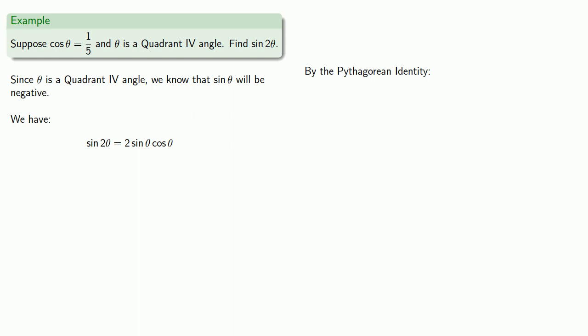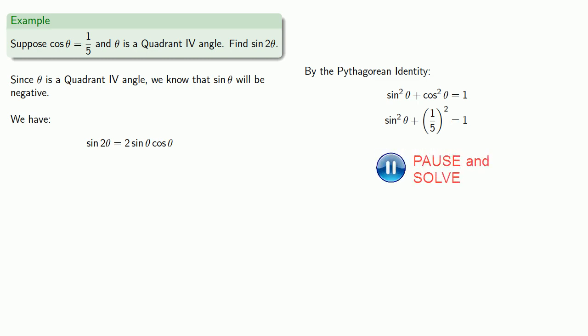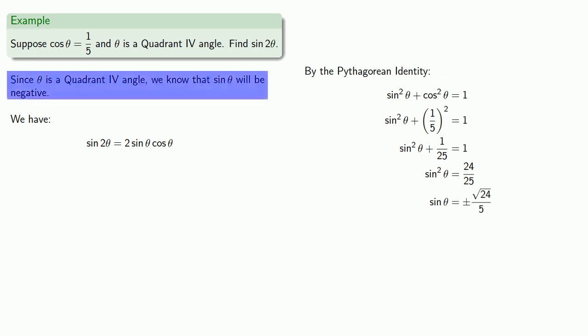So by the Pythagorean identity, sine squared theta plus cosine squared theta equals one. We know the value of cosine theta, so we can substitute and solve for sine. And since we know that the sine is negative, our actual value for sine of theta is negative square root of 24 over five.